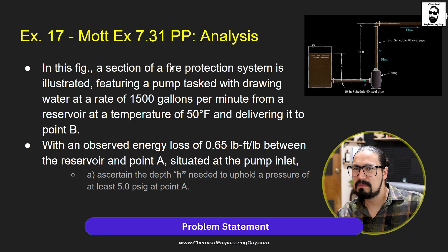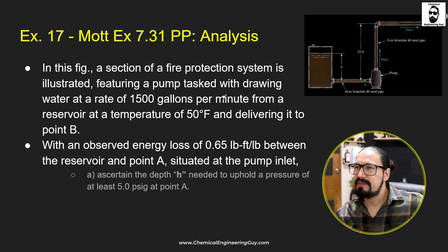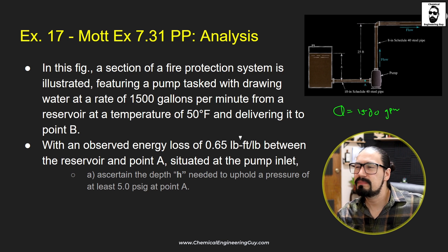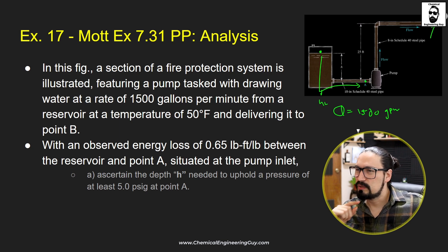In this figure, a section of a fire protection system is illustrated. We have the system right here, maybe sprinklers or something like that, featuring a pump that's withdrawing water at a rate of 1,500 gallons per minute. The temperature may be used because water changes density with respect to temperature. Delivering it to point B with an observed energy loss of 0.65 feet between the reservoir and point A. We are not giving all the data, so remember this will be the friction loss.